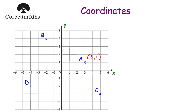Next, let's look at point B. We're going to negative 2 on the x-axis, so the first number is negative 2 — we're going 2 to the left. And then in terms of up the stairs, we're going up 1, 2, 3, 4. So the coordinates of point B would be (-2, 4).